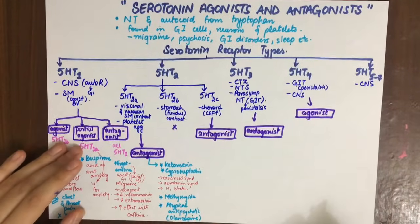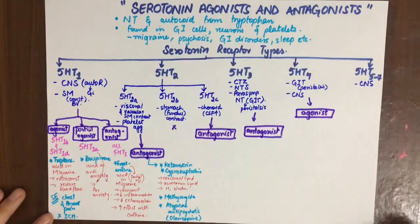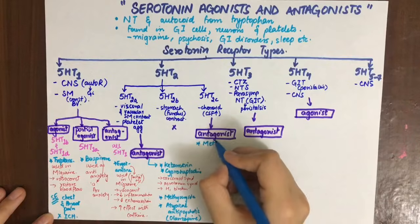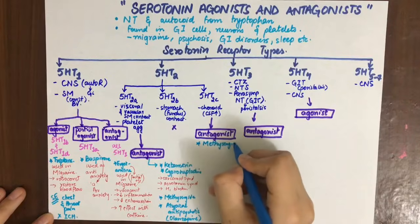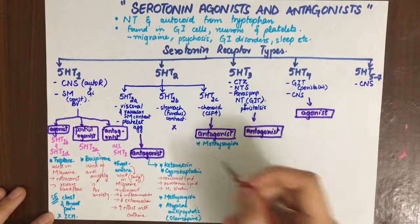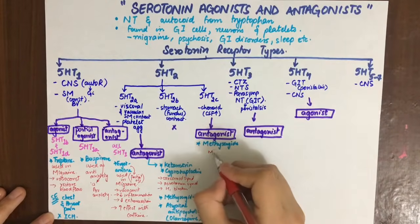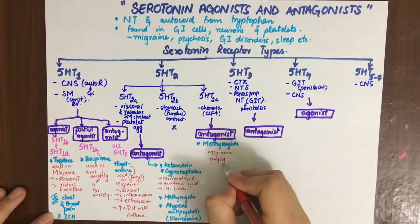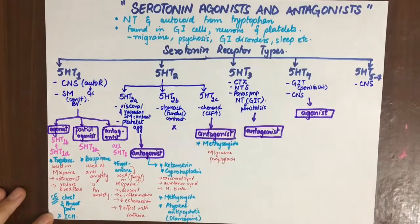The 5-HT2C antagonist is essentially one drug: methysergide. It is used in migraine prophylaxis for similar reasons as the previously discussed agents.